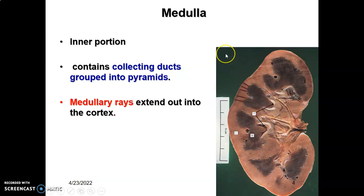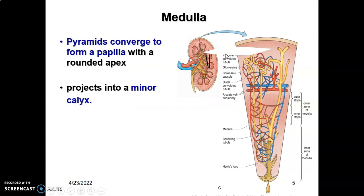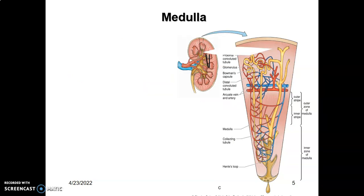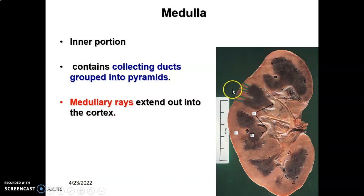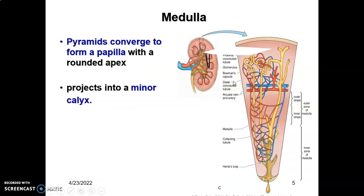The medullary rays extend out into the cortex of the kidney. From the cortex, the extensions into the medulla are the renal columns. So this is the cortex extending as renal columns, and these are medullary pyramids extending as medullary rays into the cortex. The pyramids within the medulla usually converge to form a papilla with a rounded apex.